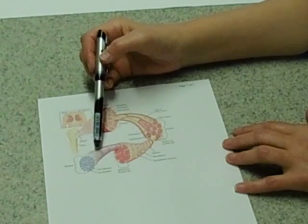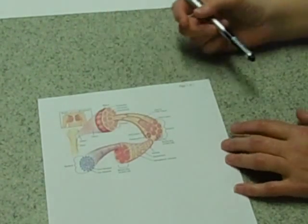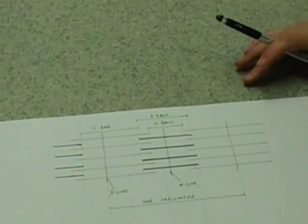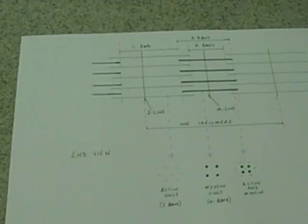These myofibrils look stripy just because of the arrangement of actin and myosin inside them. So if we look at the arrangement of actin and myosin inside one of these myofibrils,